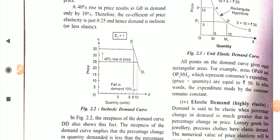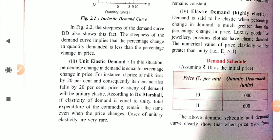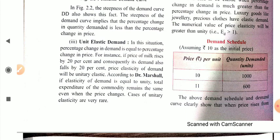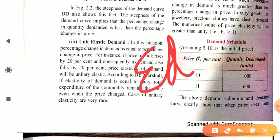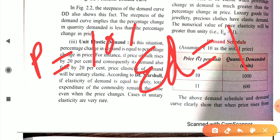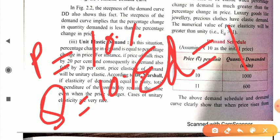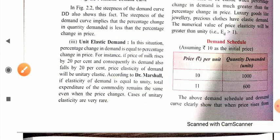This is our second degree of price elasticity of demand. The third degree is unit elastic demand. In this case, percentage change in demand is equal to percentage change in price, so E.D. equals 1. For example, if price changes by 10% and quantity changes by the same 10%, this is unit elastic demand.